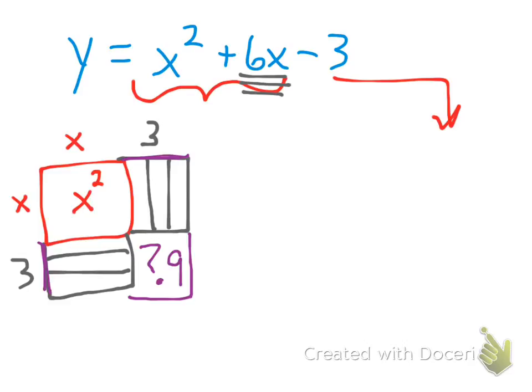So my square that I just made is now an x squared from this, plus 6 x's from these 3 and these 3, plus my 9 to complete my square. That's my square.